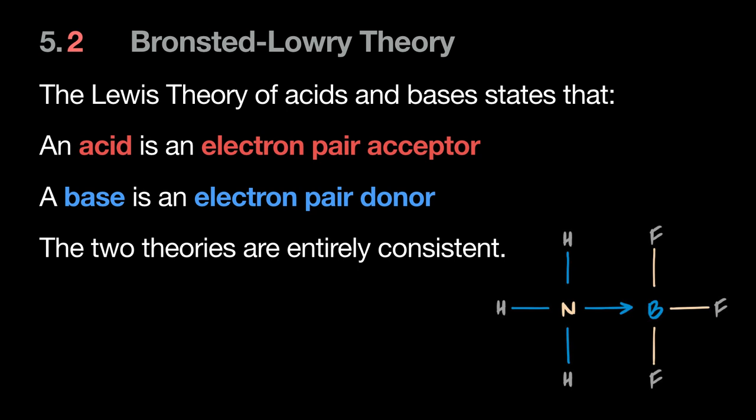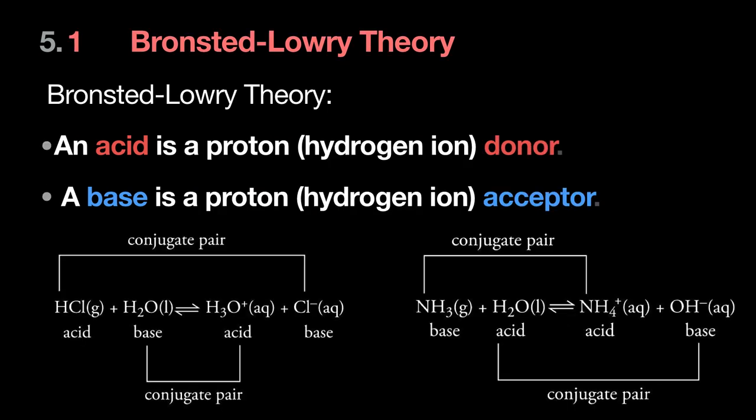Now there's another definition — much larger and more encompassing. If you think of sets, Lewis acids form the biggest set. A subset of those are Brønsted acids, and a subset of those are Arrhenius acids. For example, HCl is both a Brønsted acid and an Arrhenius acid because HCl in water gives H⁺ ions.